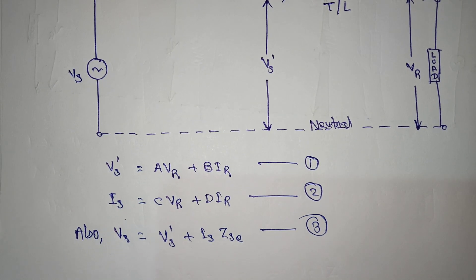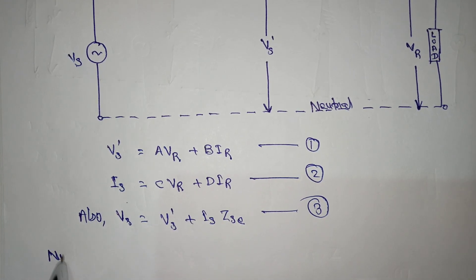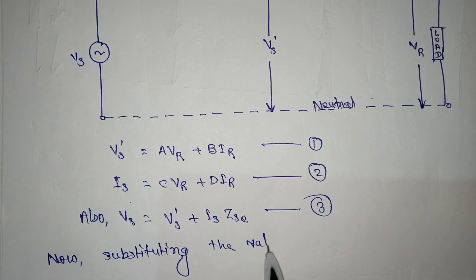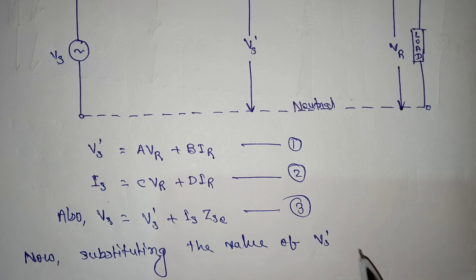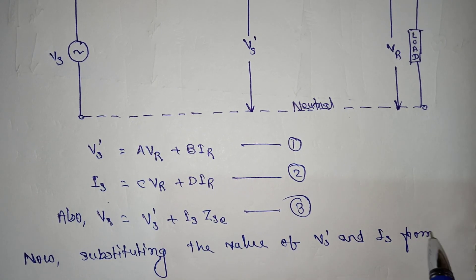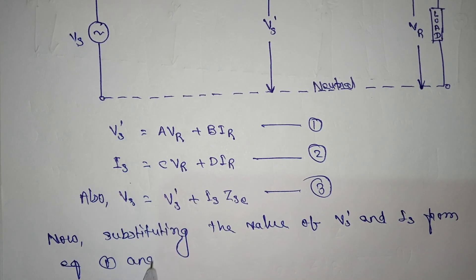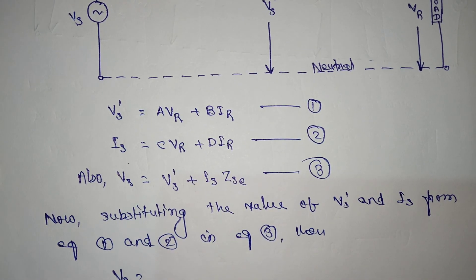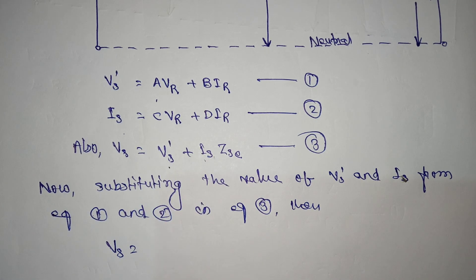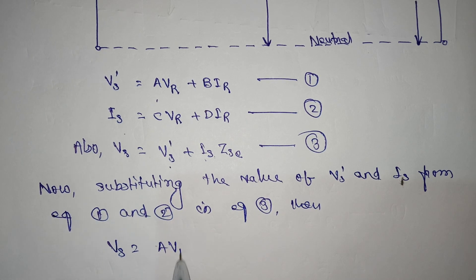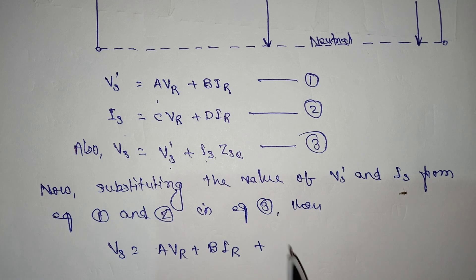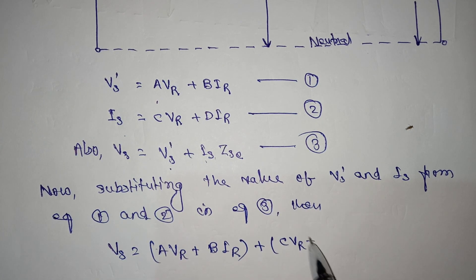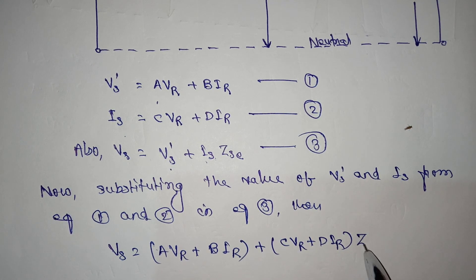We now have these three equations. Substituting the values of Vs test and Is from equations one and two into equation number three, Vs is equal to Vs test, and for Is we substitute C·VR plus D·IR, multiplied by Zse.